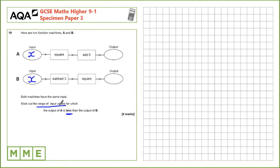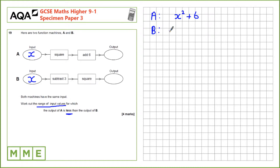Next we need to find the range of input values for which the output of A is less than the output of B, so we need to know what each output is. For A: we take X, square it to get X squared, then add 6 — so the output for A is X² + 6. For B: we take X, subtract 3 to get X minus 3, then square it — giving (X - 3)², which we put in brackets.